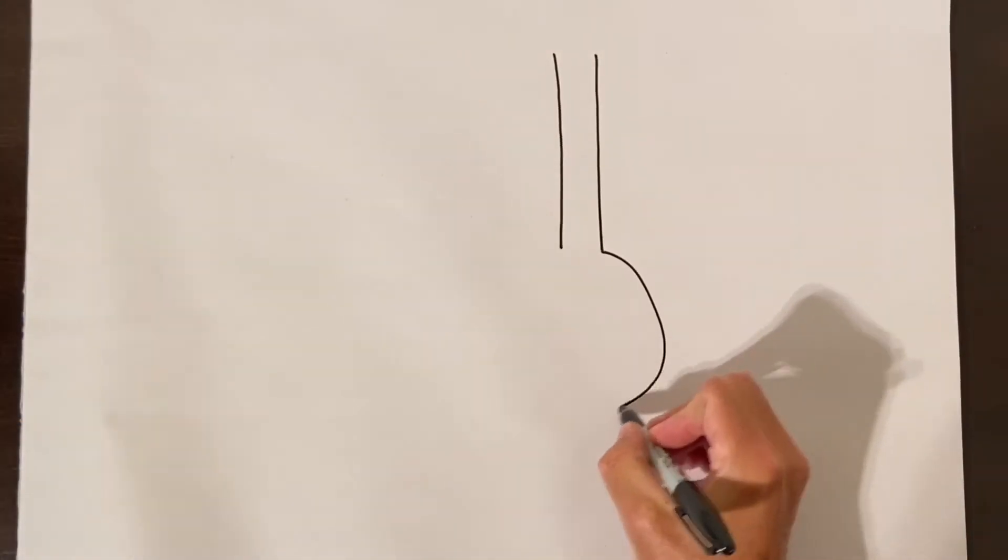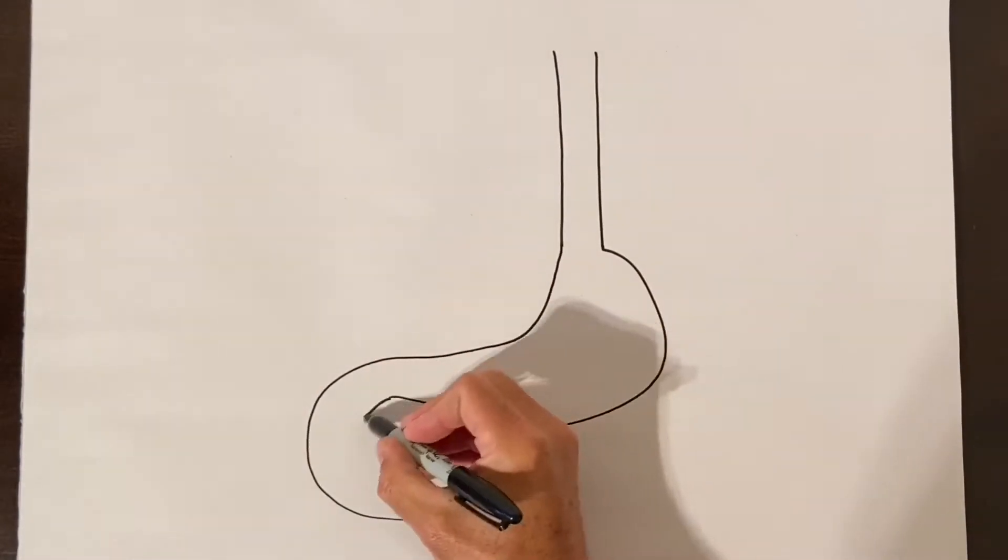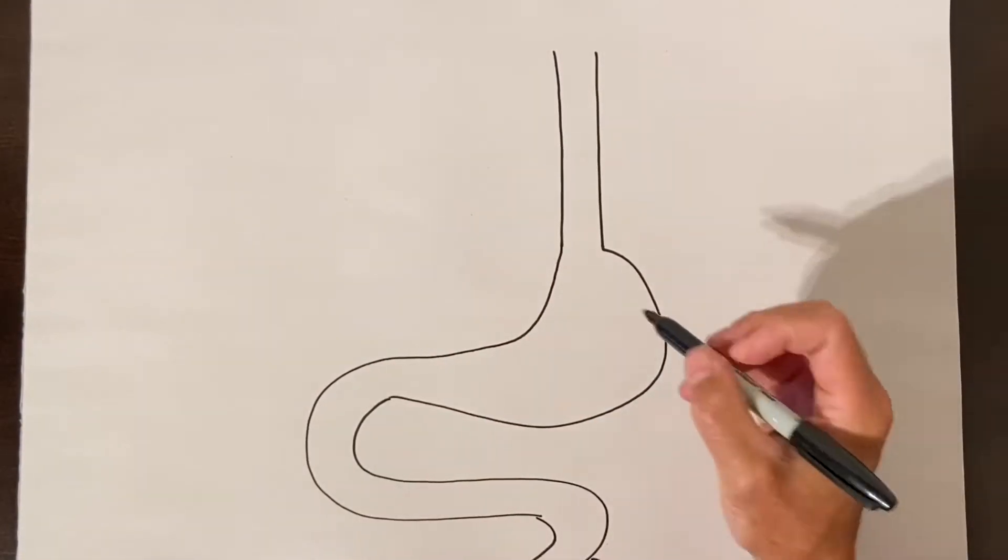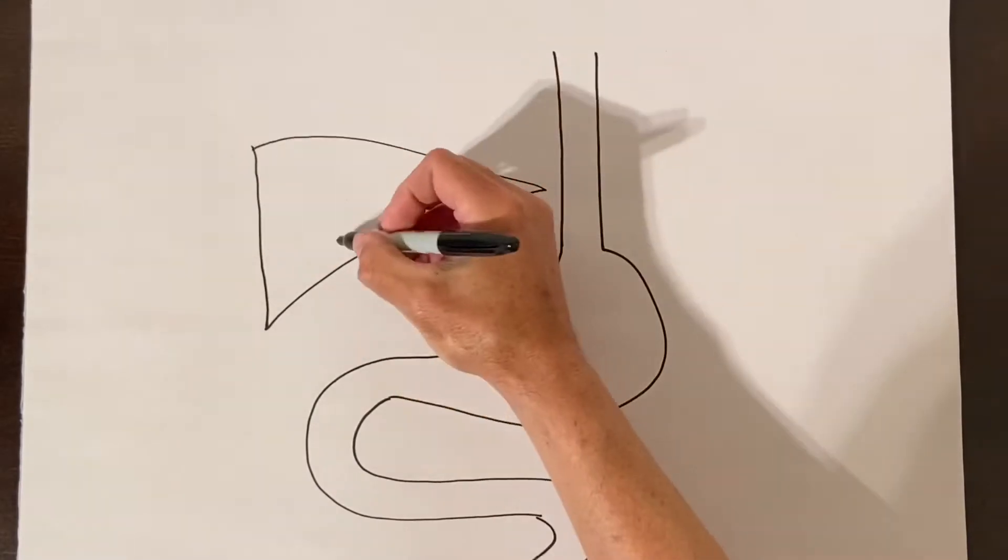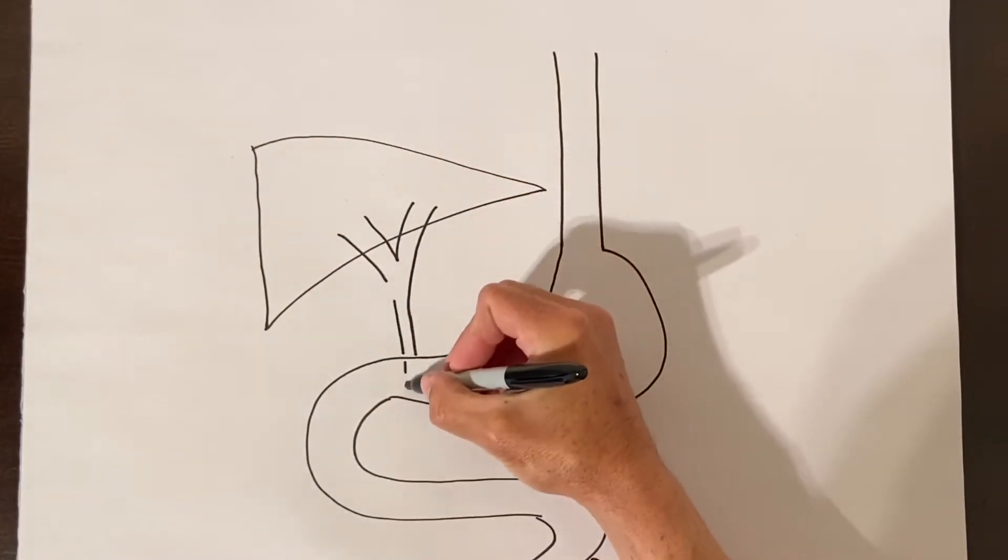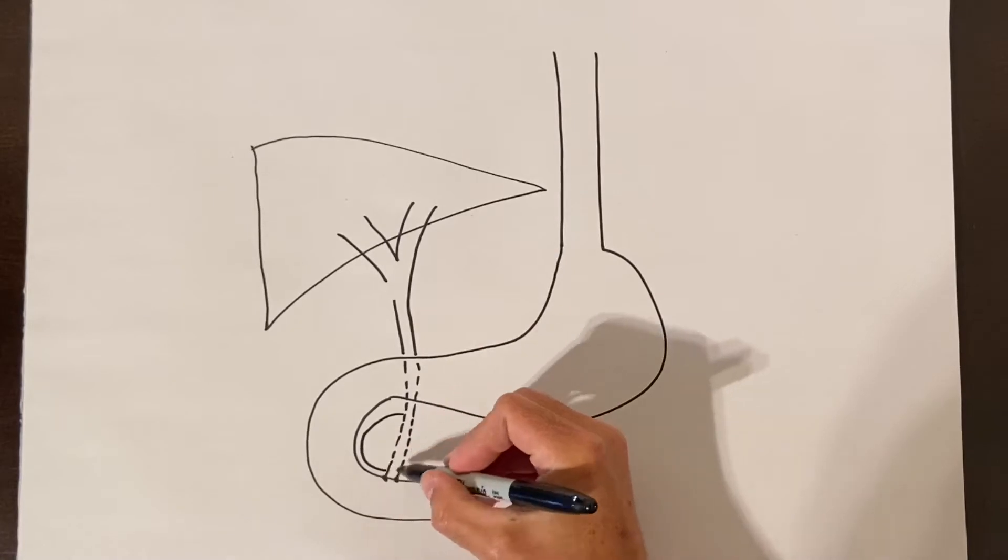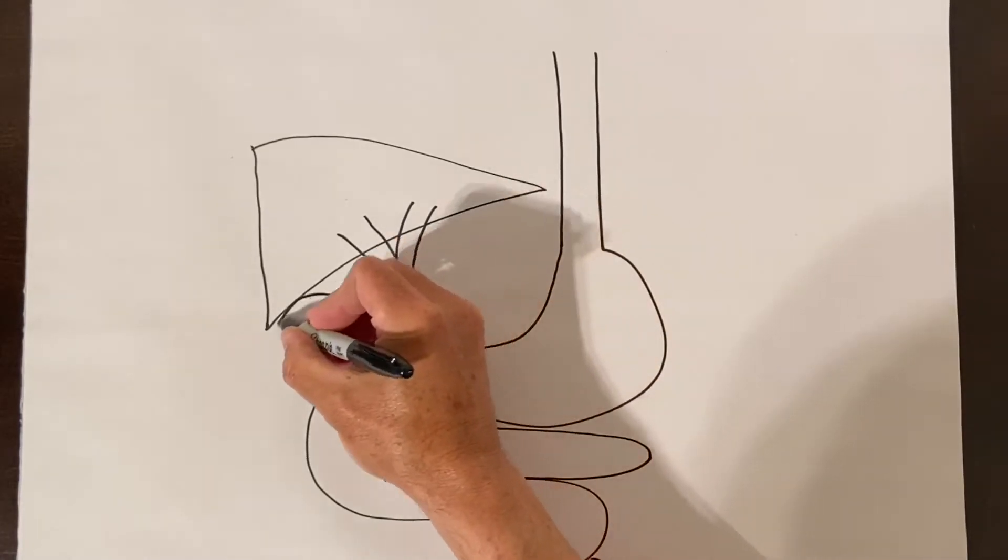Today we are talking about gallstone problems. Let's describe some anatomy. When you swallow food it comes down your esophagus to your stomach. The stomach empties into the first part of the small intestine called the duodenum which curves around in a c-shape and then runs down as the rest of the small intestine.